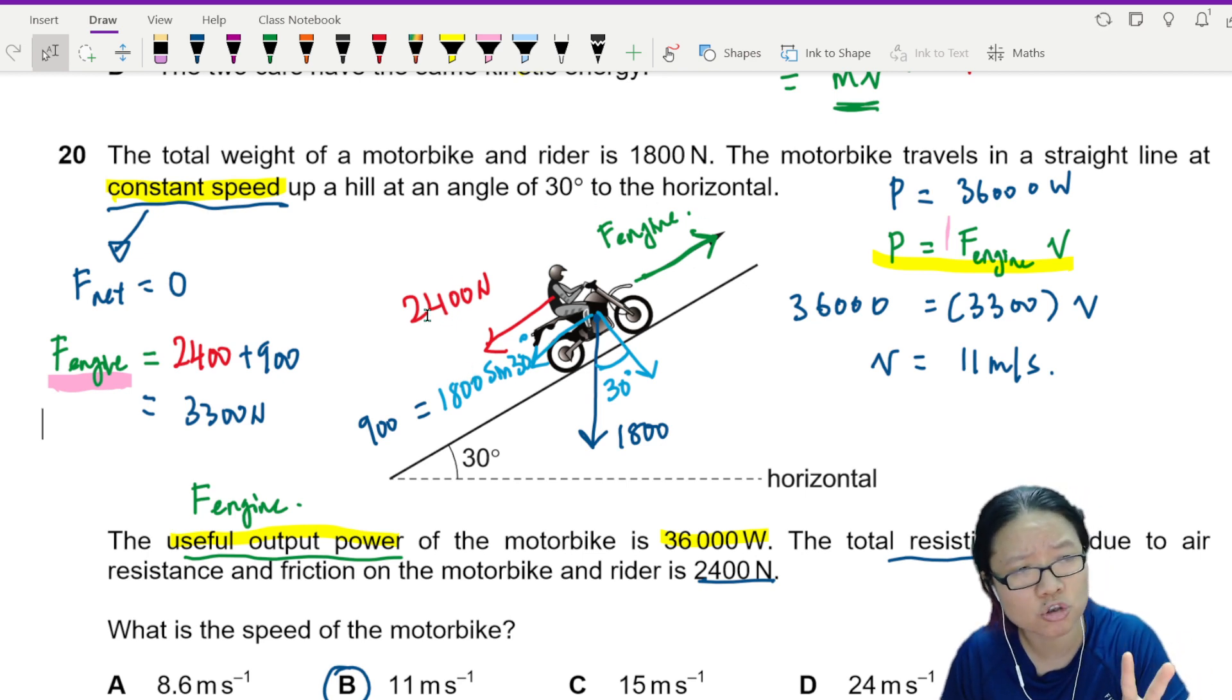It's actually engine fighting these two. The engine is doing a hard job here. So it's 2400 plus 900 driving the motorcycle up at constant speed. So this is the work of the engine. It creates this much power and it allows the motorbike to travel at 11 meter per second. That's it for question 22.